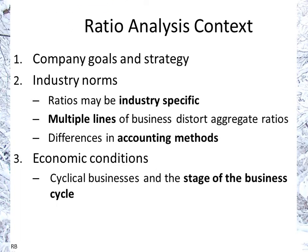When doing ratio analysis, it depends on the company's goals and strategy. If a company has a strategic plan requiring growth in a new business that won't be profitable for the next couple of years, values will look different than if a company is trying to consolidate. There are also industry norm issues — ratios are always industry-specific. If you have multiple lines of business, that makes comparison difficult because aggregated ratios are a mix based on the business mix, and accounting methods may differ.